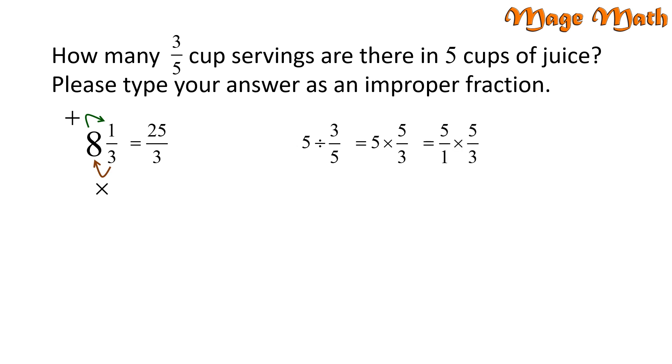We do that because when we multiply fractions, we multiply straight across. 5 times 5 is 25 and 1 times 3 is 3. The answer is 25 thirds. Nice job.